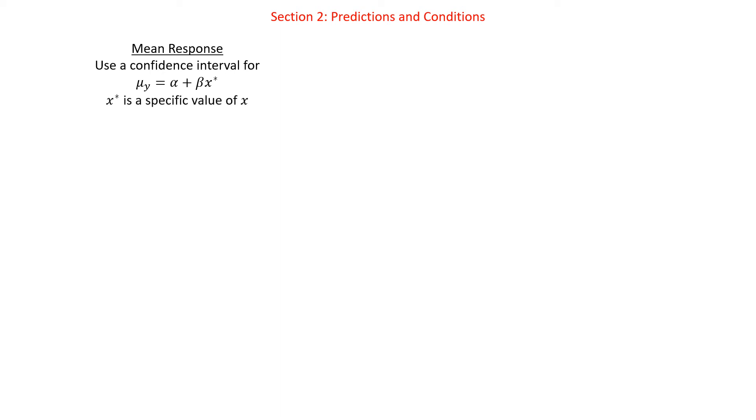Section two: we're looking at predictions and conditions. We have two different types of predictions. We have a prediction for a mean response — for example, if we're measuring shoe size and height, and we use shoe size to predict height. If we have a shoe size of 11, the mean height is predicted to be, say, 5'10". That's the mean height — that's a mean response. For that, we use a confidence interval for the mean response: mu of y equals alpha plus beta times x-star, where x-star is just a specific value of x — like the size 11 shoe.